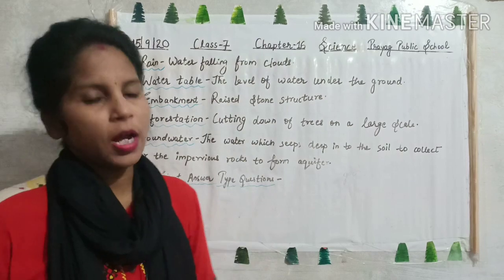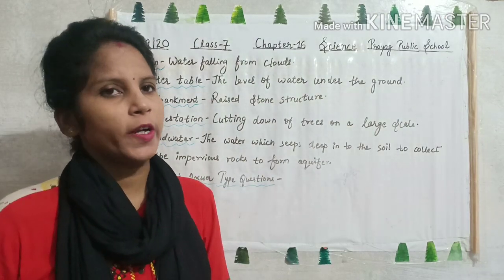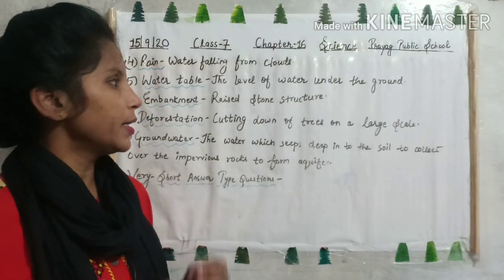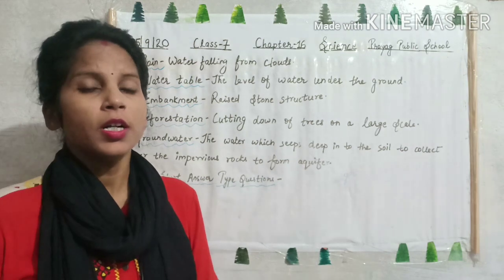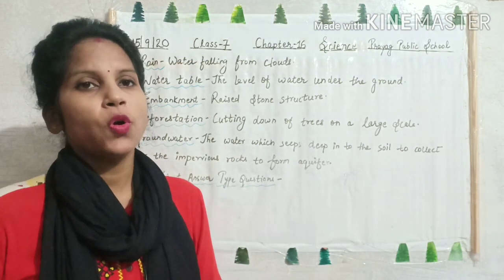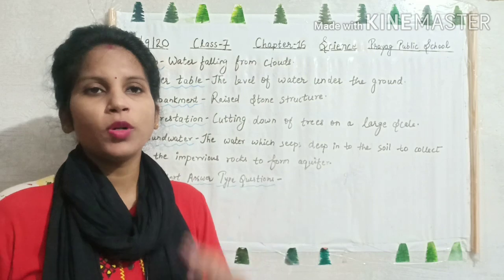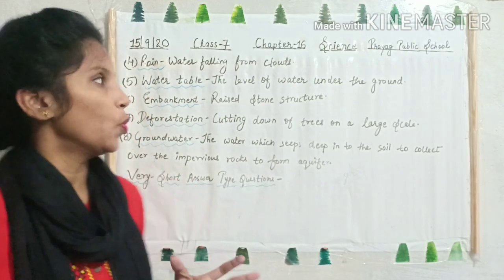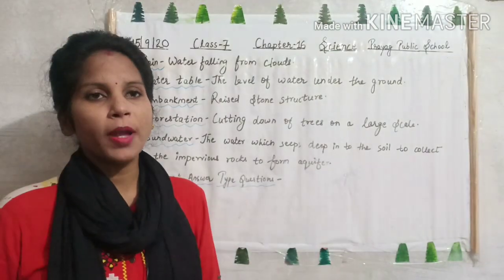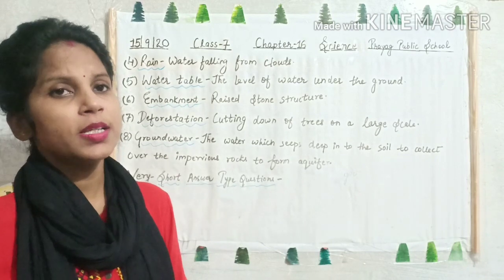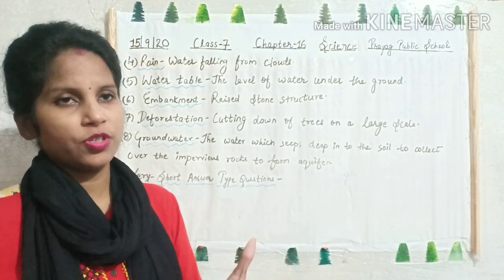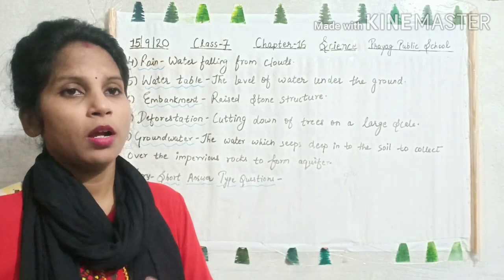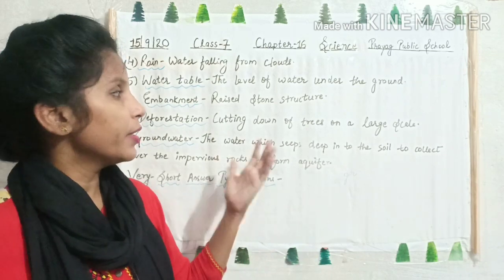Rain — water falling from clouds. Water that falls from clouds is called rain. Water table — the level of water under the ground. In some places the water table is very high while in some places it is very low. Then embankment — embankment is a raised stone structure, usually found near dams.